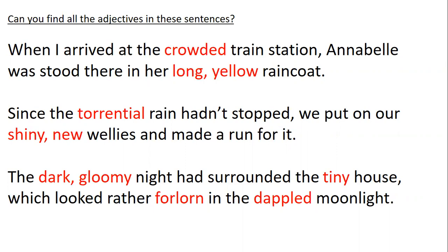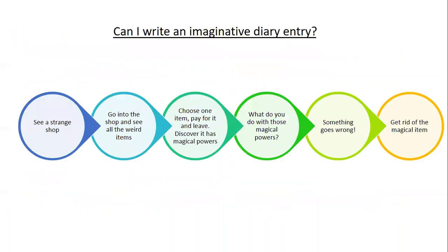'Torrential' means really really heavy — like a torrent, a really heavy downpour. 'Forlorn' means sort of abandoned, lonely, and sad. 'Dappled' means where it's not just a solid colour — like when you're walking through the woods and there's sunlight coming down but with leaf shadows in between, so it's bits of shadow and bits of light all mixed up. Those are all the adjectives you should have got.